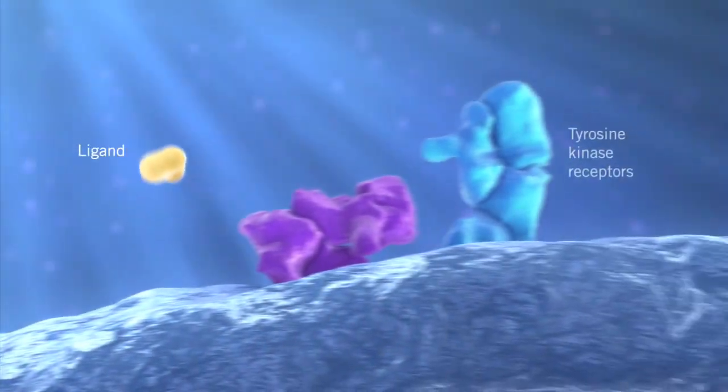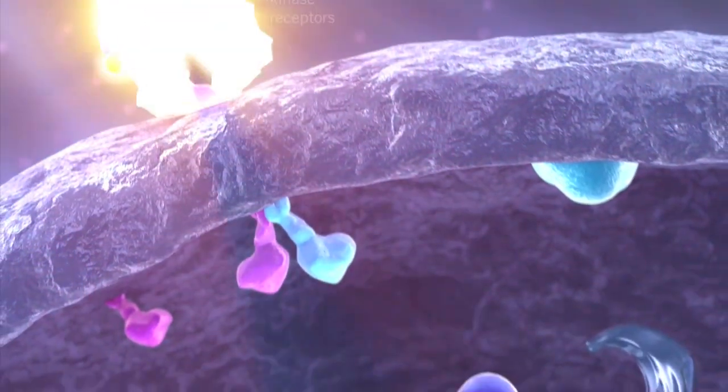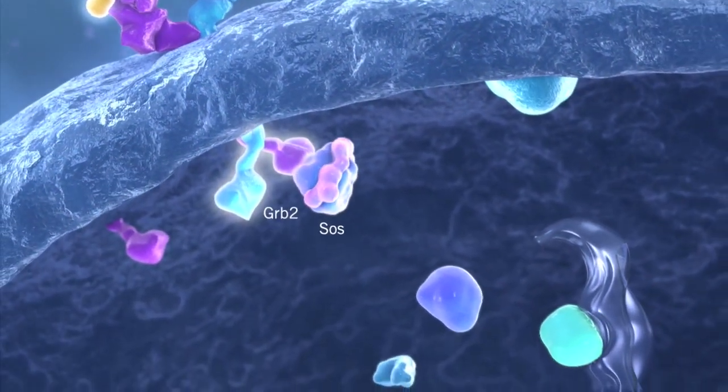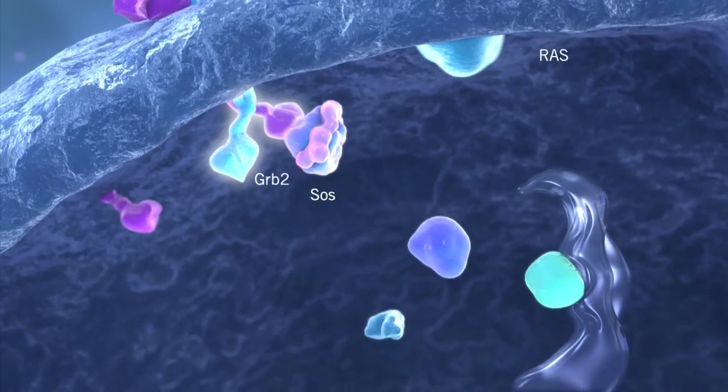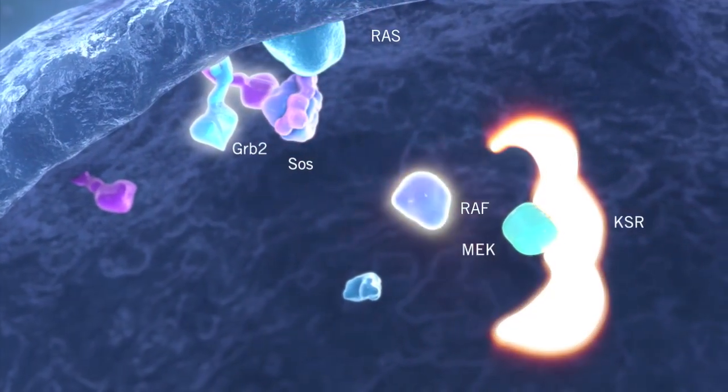MAPK signaling is activated through binding of a growth factor to the extracellular domain of the tyrosine kinase receptor. Signaling molecules GRB2 and SOS are next recruited to the internal docking site, resulting in RAS activation at the membrane.